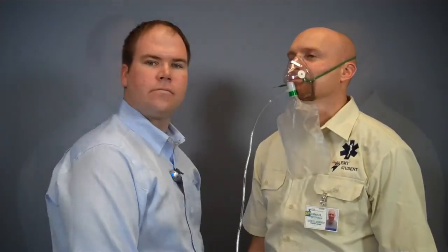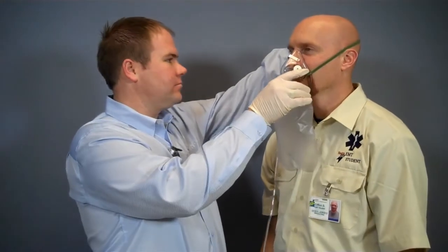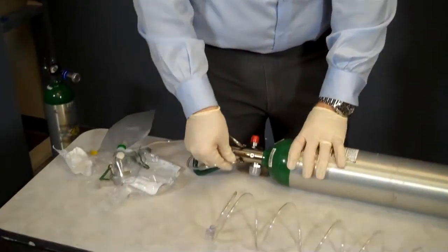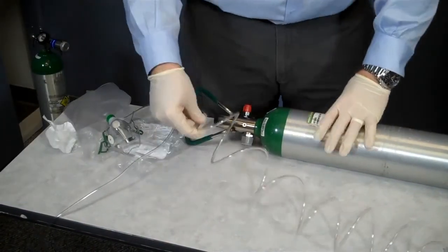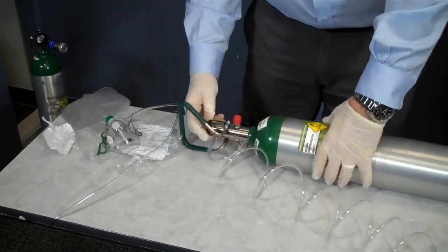If the patient does not tolerate the non-rebreather mask, I may be able to switch to a nasal cannula. I will remove the non-rebreather mask from the patient and regulator, then connect the cannula to the oxygen port valve on the regulator.